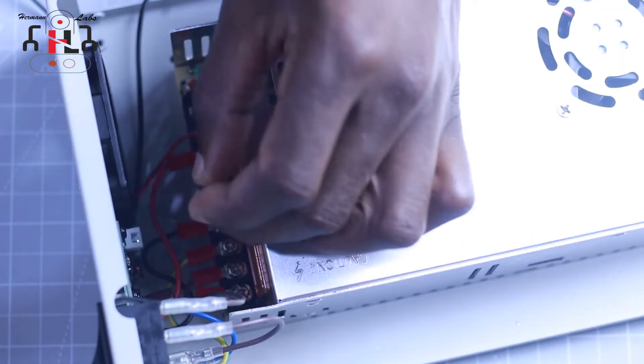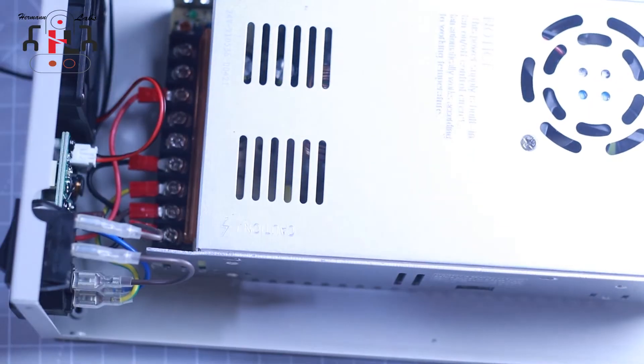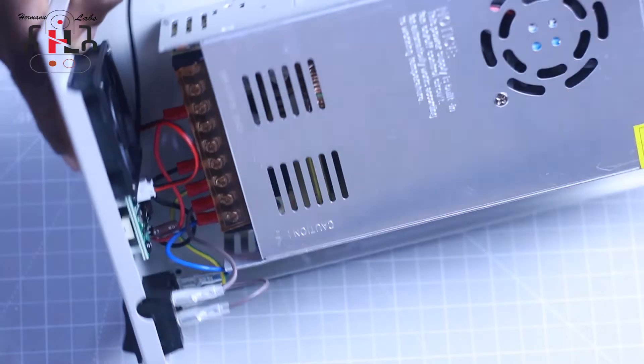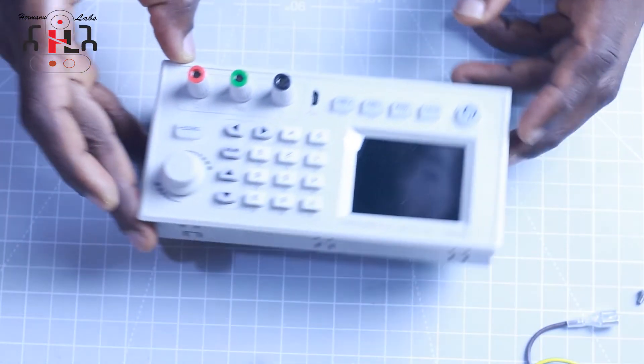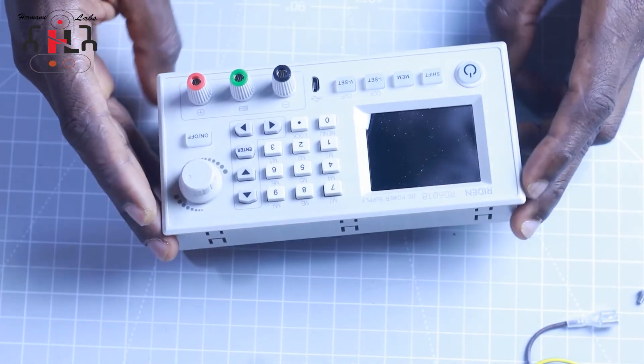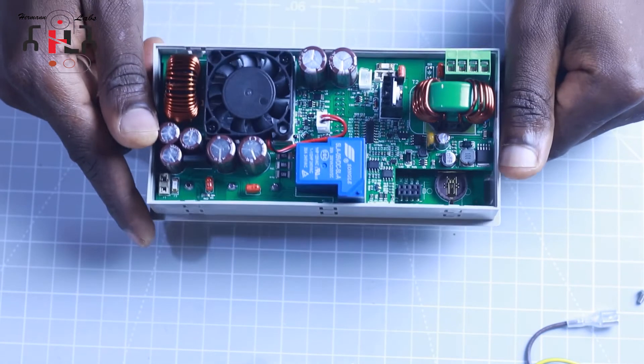After doing this, we have to connect the fan terminals to the temperature control board. And then we continue the assembly process by putting together the digital controller.